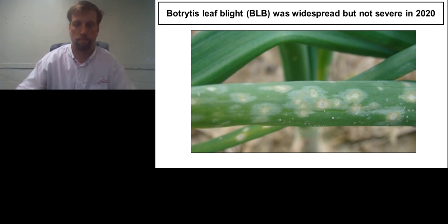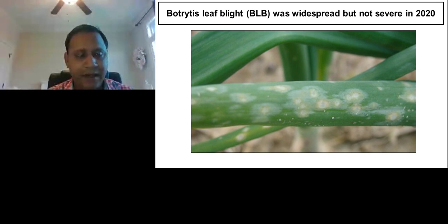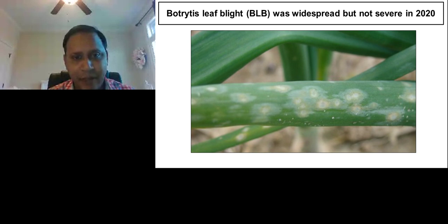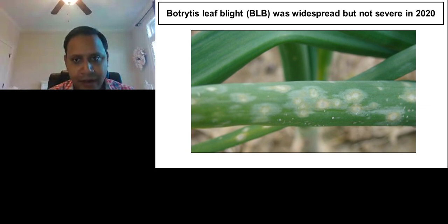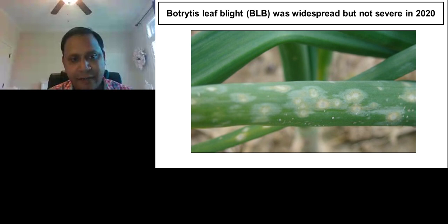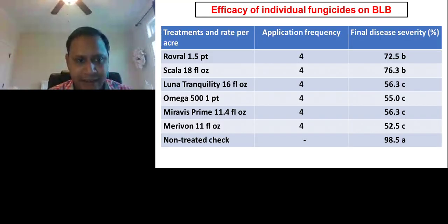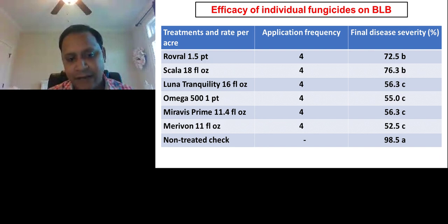Thank you, Jason. It is my privilege to be here and present my update on onion fungal and bacterial diseases. The idea of my presentation is to give main points and snapshots of key things we observed and learned over the last couple of years. The first disease I'm going to mention today is Botrytis leaf blight. Botrytis leaf blight is an endemic disease which we see in our Vidalia onions every year, although the severity and spread varies year to year. 2020 was not severe for Botrytis leaf blight, but we did have some Stemphylium that came after Botrytis.